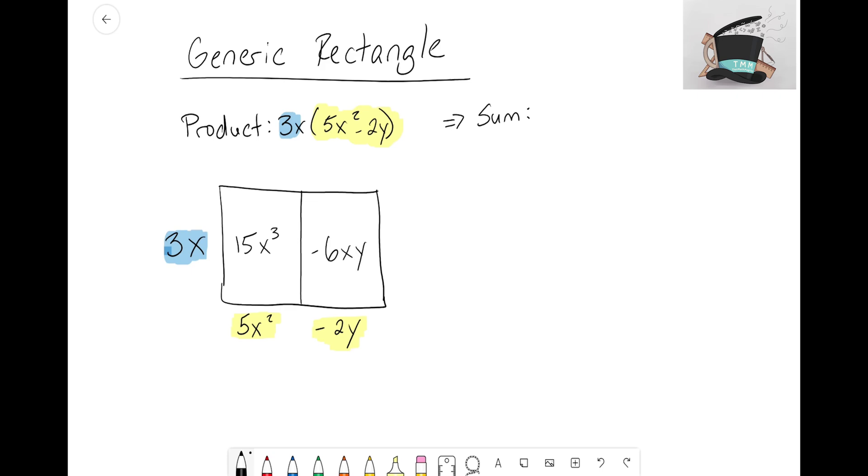Our sum, writing out the terms, is 15x³ - 6xy. I don't see any way to combine or simplify those terms, so that is our answer.